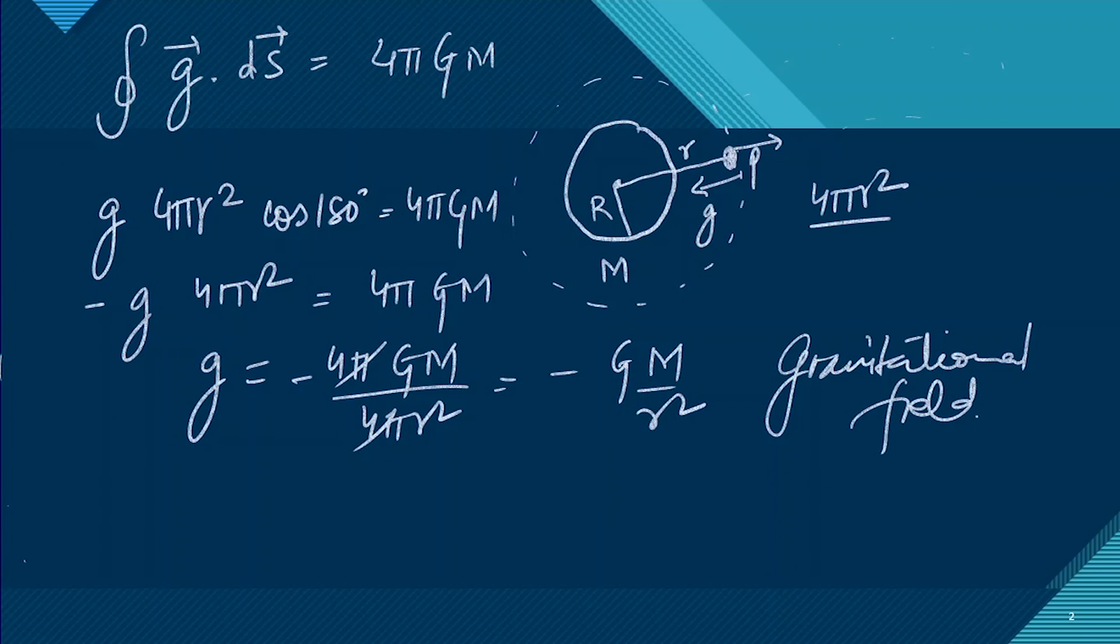Now we have to find out the gravitational potential. The gravitational potential can be written as the integral of gravitational field dot dl, and we have to integrate from infinity to r.